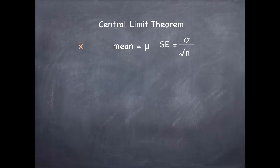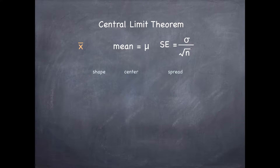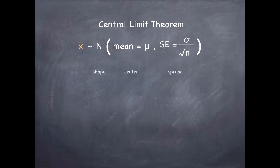We can see that as n goes up — as the denominator goes up — we would expect the standard error to go down, but we don't expect a one-to-one relationship because it only goes down by the square root of n, not the absolute value. So we've talked about the center and spread of the distribution. Remember, when describing distributions we always talk about three things: center, spread, and shape. The central limit theorem tells us that this distribution's shape is going to be nearly normal. So formally, our sample mean X-bar is distributed nearly normally with mean at the population mean and standard error equal to the population standard deviation divided by the square root of n.